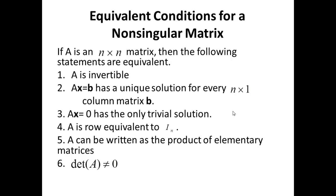Here are some equivalent conditions for a non-singular matrix, metrics with inverse, invertible matrix. If A is a matrix of order N, i.e. an N by N matrix, then the following statements are equivalent. Number 1, A is invertible. Number 2, A x equals B has a unique solution for every N by 1 column matrix B.